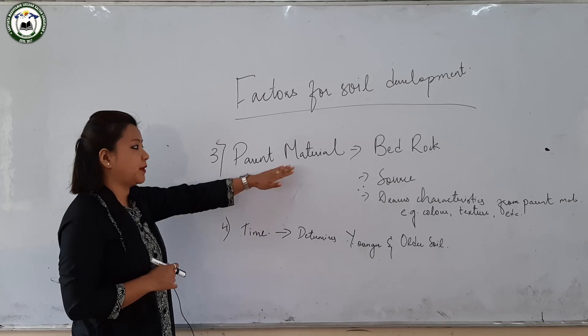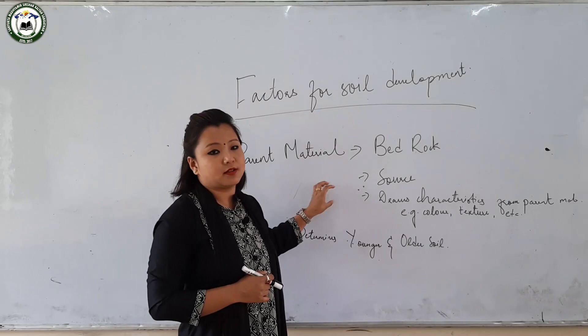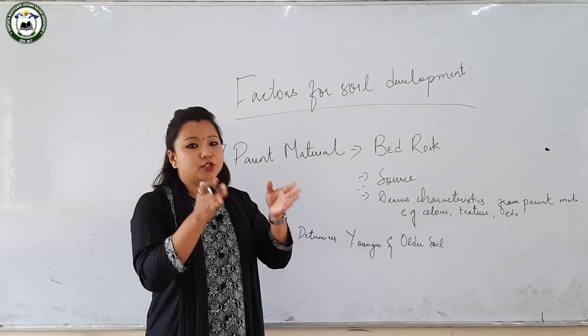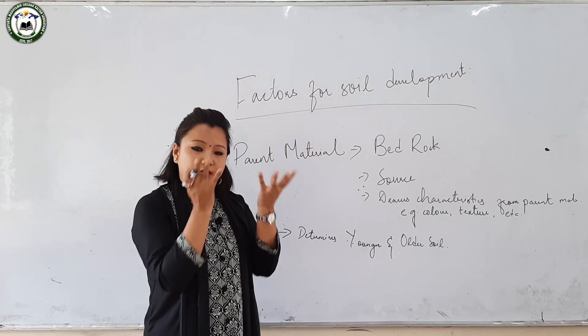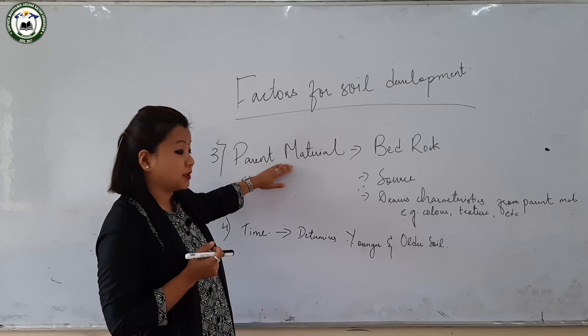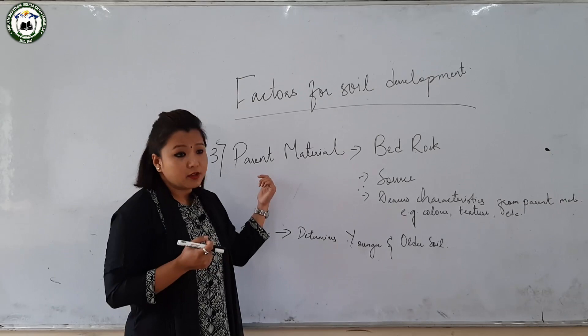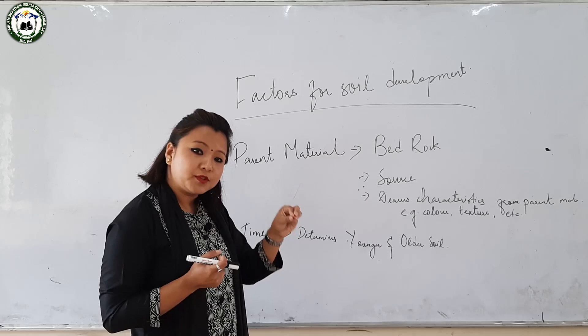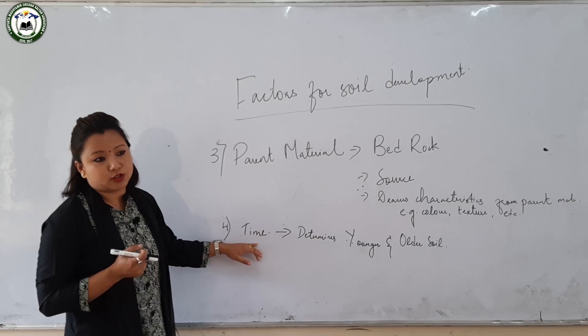Moving on to the third factor — parent material: parent material is regarded as the bedrock or source from which soil particles originate. It is a rock which gets disintegrated or weathered by the action of river water, ice, and wind, turning into soil particles. Because of the parent material, soil tends to draw certain characteristics such as color, texture, shape, and size. For example, if the parent material is red in color, the soil formed from it tends to also be red.